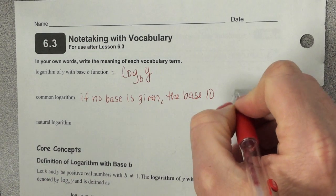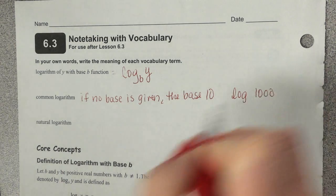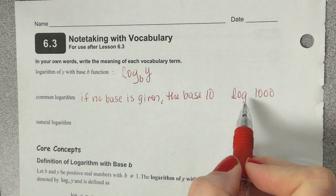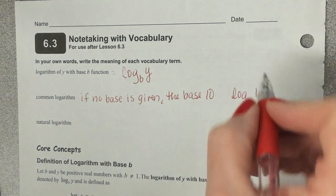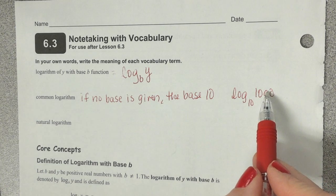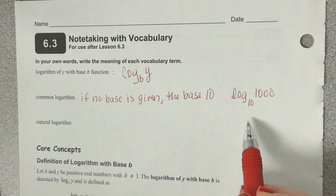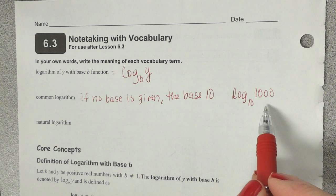So if I see log of 1,000, if we saw that, there's no base given. But what does the base have to be? 10. And so this would be saying, then, 10 to what power is going to give us 1,000? What's that going to be? 10 to what power would give us 1,000? Three, right?